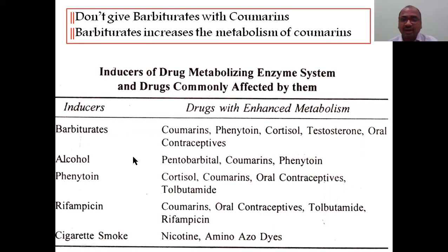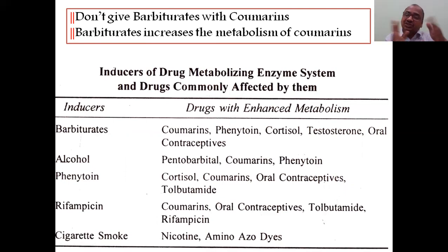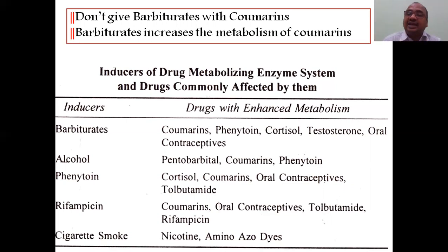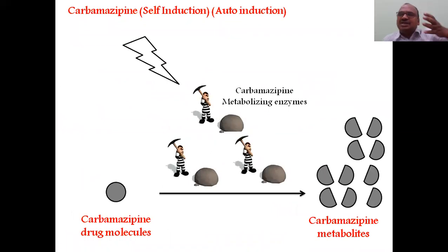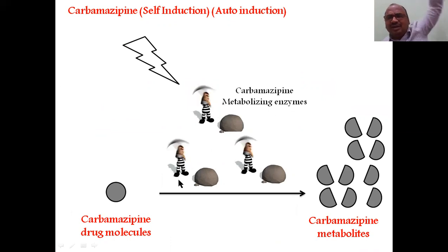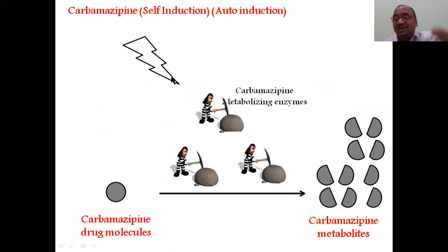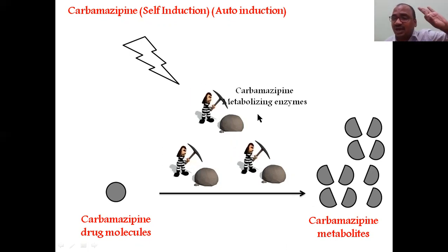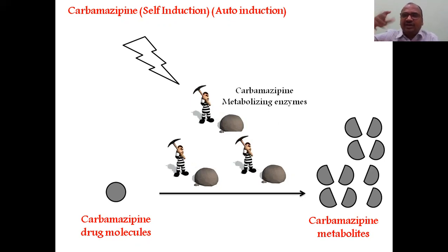Barbiturates are inducers — don't give barbiturates with coumarin, phenytoin, cortisol, or testosterone. These are all drug-drug interactions. Importantly, carbamazepine is an example of self-induction (auto-induction): carbamazepine increases its own metabolizing enzymes. CBZ (carbamazepine) increases its own enzyme production — this is called self-induction or auto-induction.